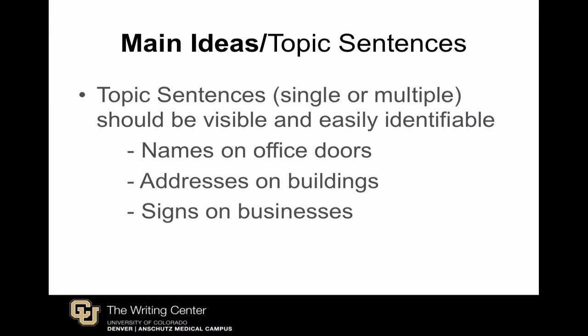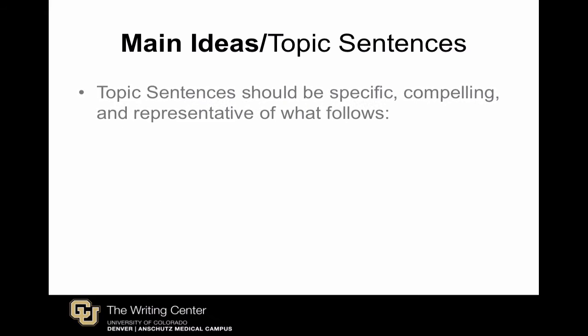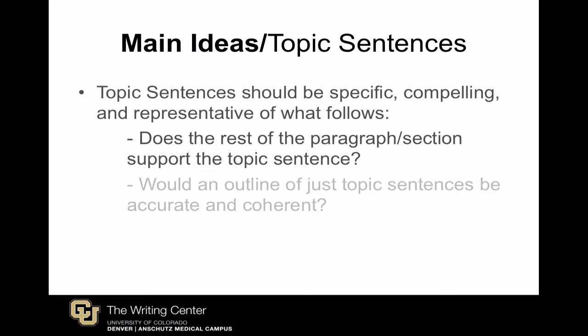Imagine if I told you to come see me in my office in central building 100. When you arrive, my name is on the door. But when you knock and the door opens, someone else is inside — that would be pretty disorienting. In a similar way, if your topic sentences don't accurately predict the contents of the paragraph that follows, readers feel disoriented. If you went through a section or entire composition and pulled just the first sentences of paragraphs, would an outline of those sentences be an accurate representation of the text? If not, they may need closer inspection.